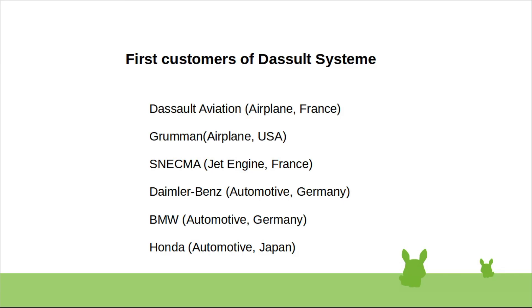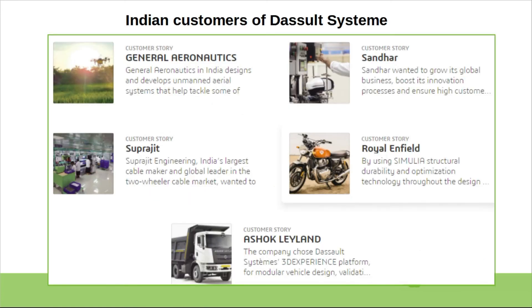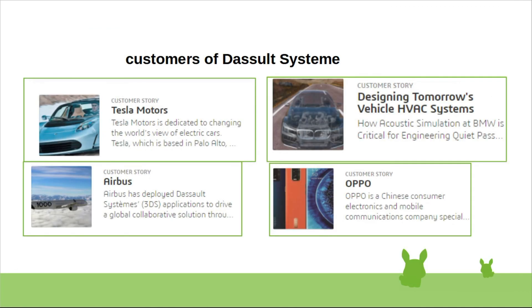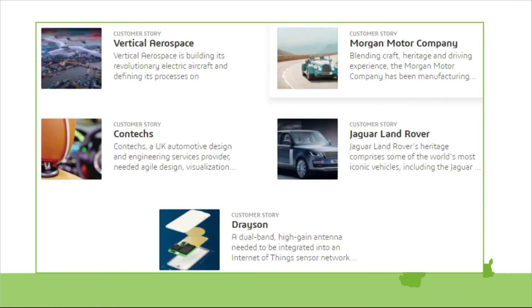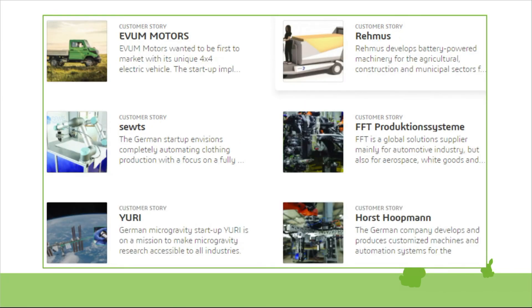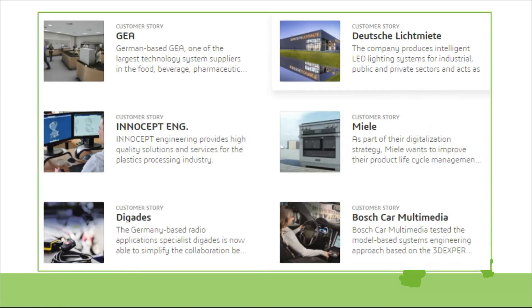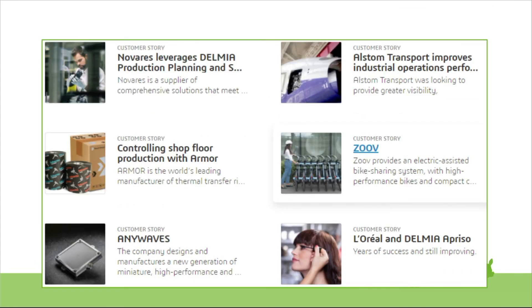Some examples of companies using CATIA: Indian customers include General Aeronautics, Suprajit, Ashok Leyland, Sandhar, and Royal Enfield. Global users include Tesla, BMW, Solar Impulse, Land Rover, Jaguar, Ashok Leyland, Suprajit, Royal Enfield, Yamaha, Airbus, and Fin Airline. We can say the scope of this software is very huge and many industries are using it.